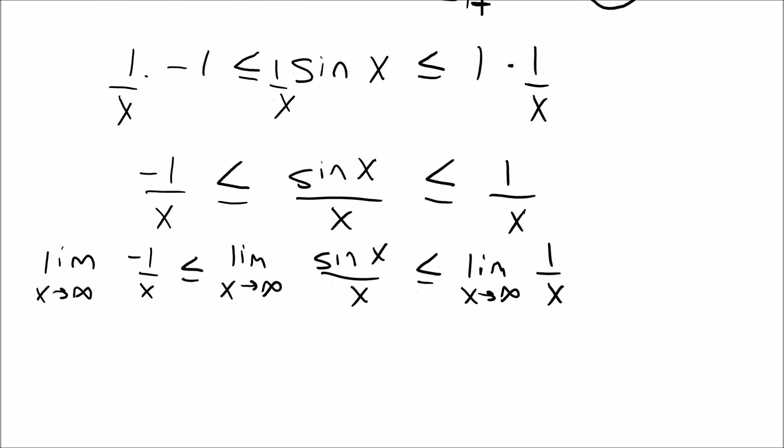So now I'm going to go ahead and do out each one of these. Well for the first part there, if I were to figure out the limit as x approaches infinity, you notice that your denominator is getting larger and larger and larger, which means your function is getting closer and closer to zero. So we're going to end up with zero is less than the limit as x approaches infinity of sine x over x.